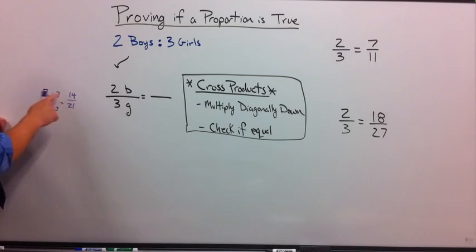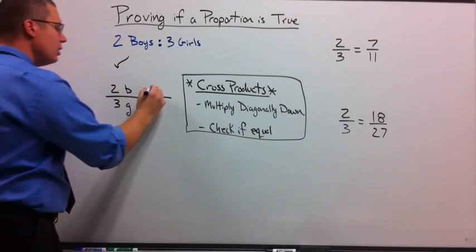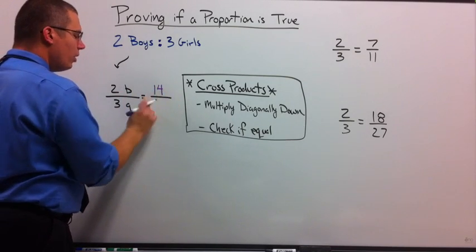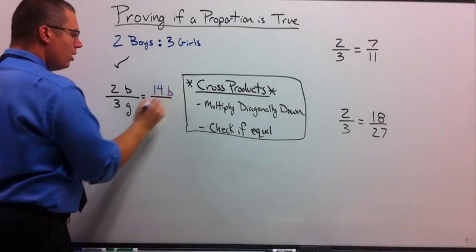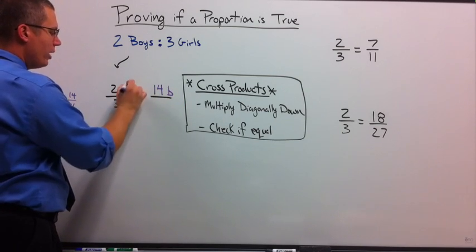For seven groups of two give me 14 boys. Seven groups of three, 21 girls. So I'll put 14 here. I will include the label for now. Labels need to match going across.